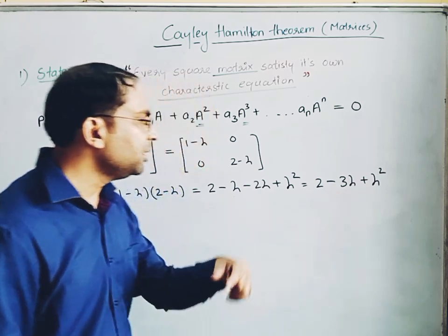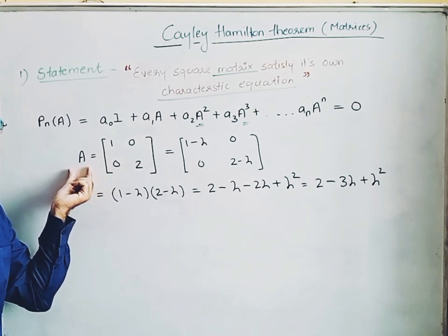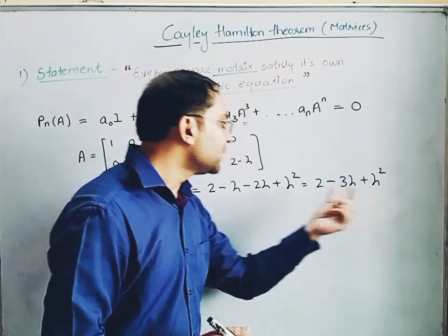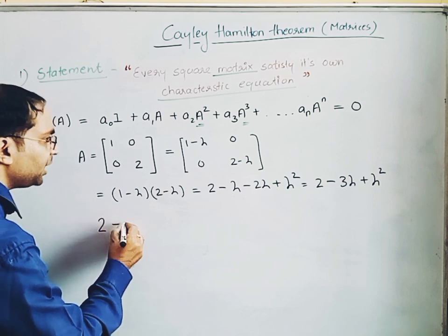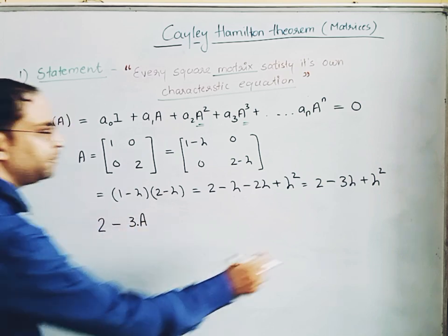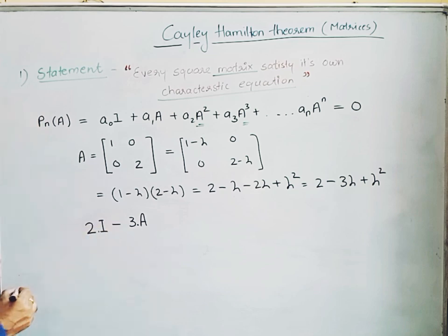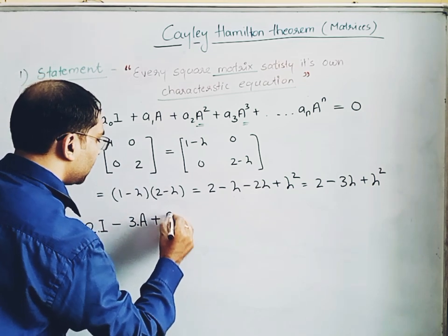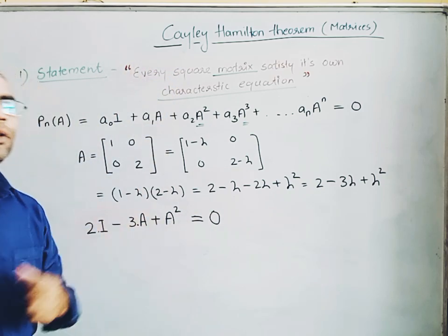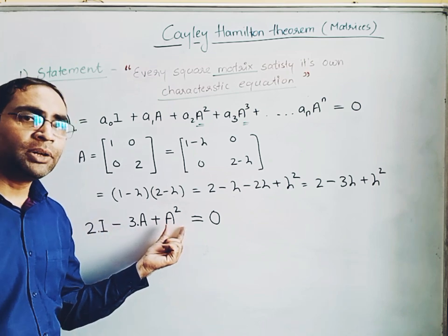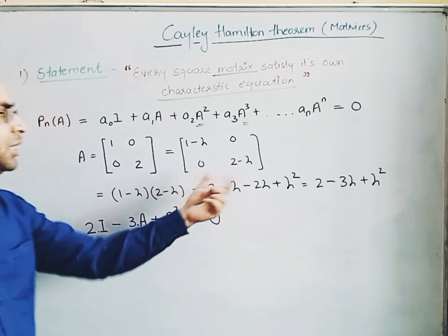According to the Cayley-Hamilton theorem, we replace lambda with the matrix A in the characteristic equation, and the result must equal zero. So we get A² − 3A + 2I = 0. This is the Cayley-Hamilton theorem in action. We can use this to find powers of the matrix, and even the inverse of the matrix, which we will see in the next upcoming lecture.